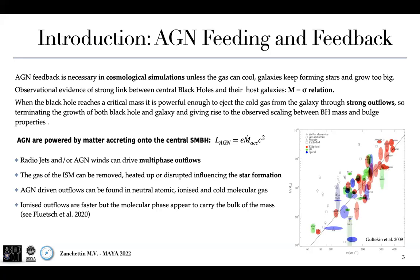The AGN feedback is a main ingredient in cosmological simulations. Otherwise, the gas can cool and galaxies keep forming stars and grow too big. Moreover, there are strong observational evidence of a very tight link between the black hole and their host galaxies, such as the M-sigma relation. It is thought that when the black hole reaches a critical mass, it is powerful enough to eject cold gas from the galaxy through strong outflows, so terminating both its growth and the galaxy's, giving rise to the observed scaling relation between the black hole mass and the host galaxy properties.